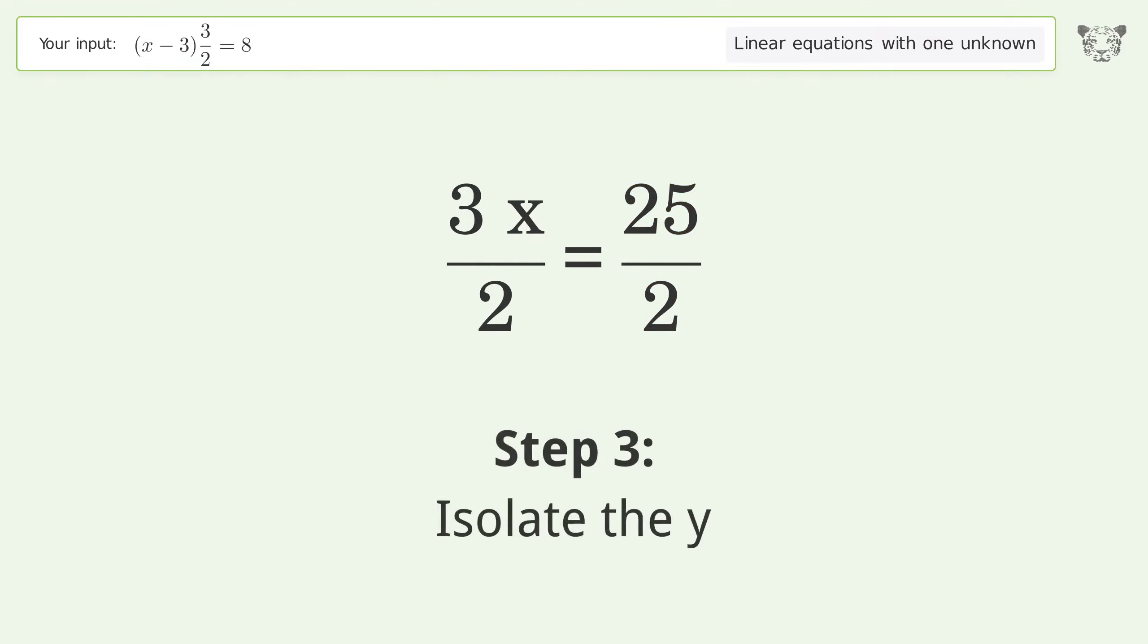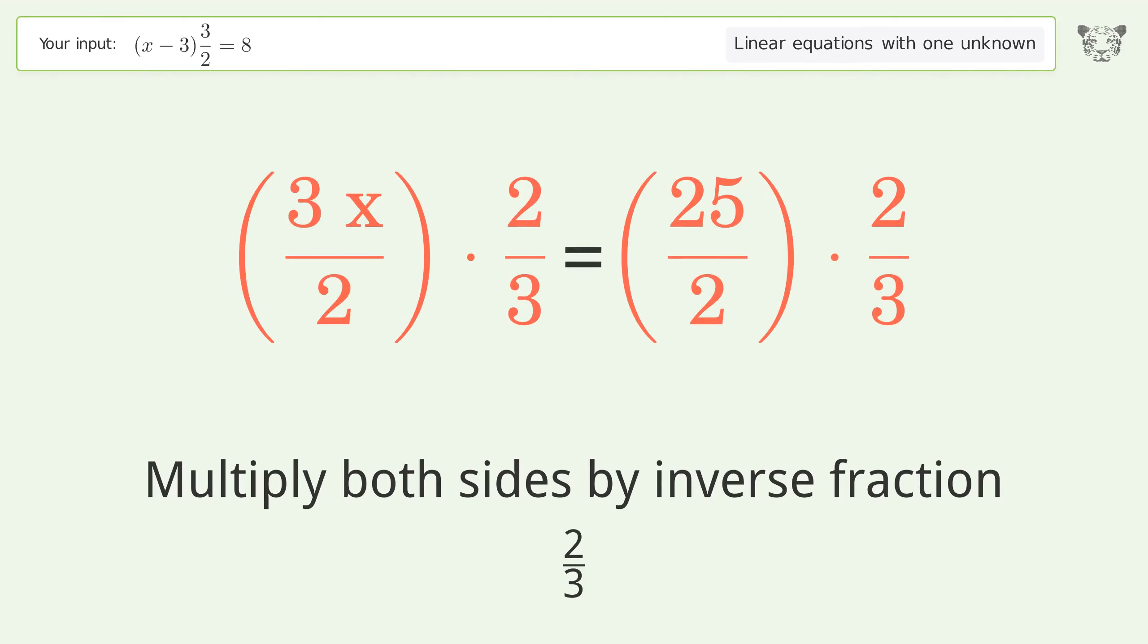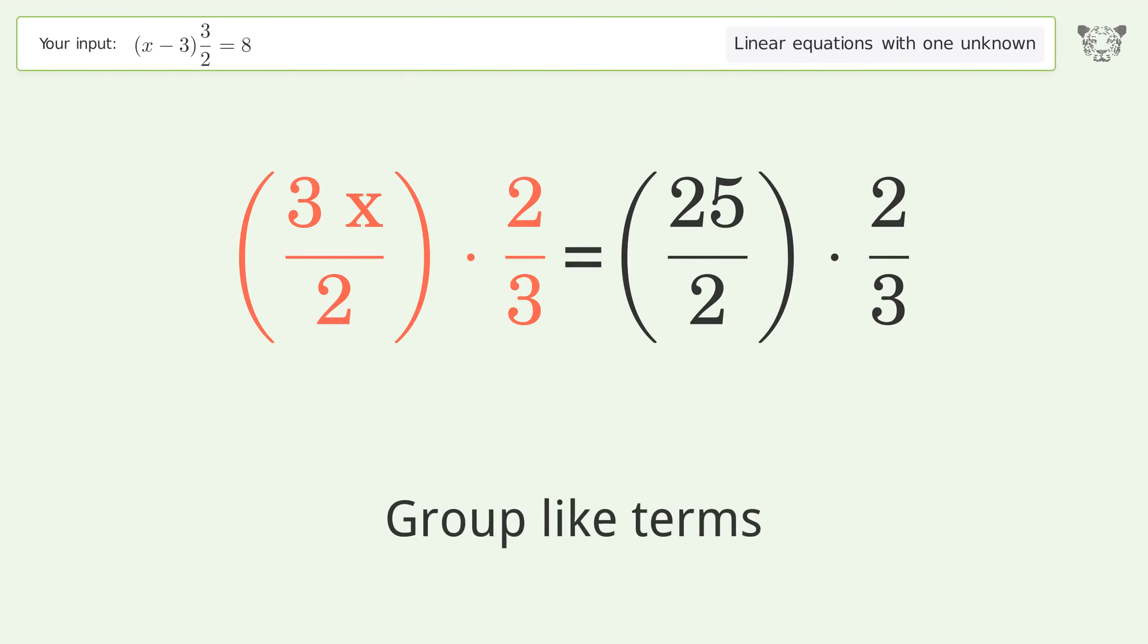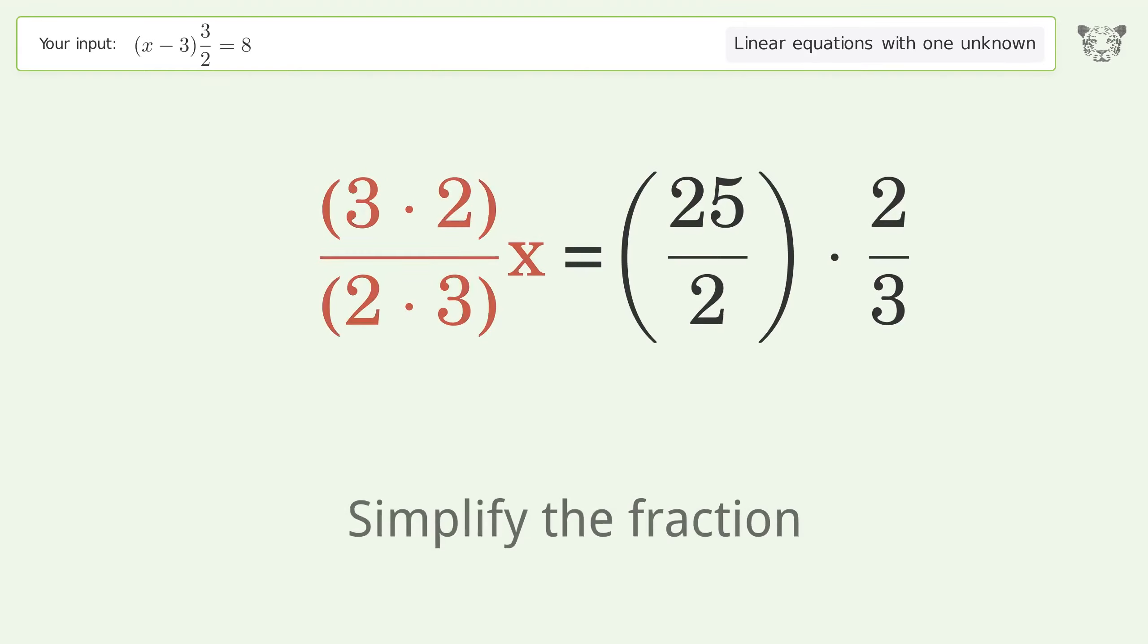Isolate the y. Multiply both sides by inverse fraction 2 over 3. Group like terms. Multiply the coefficients. Simplify the fraction.